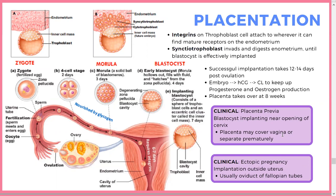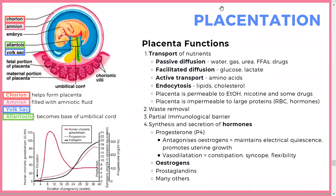The placenta transports a variety of substances via passive, facilitated, active, and endocytosis mechanisms. You don't need to memorize every molecule, but the principle is: smaller molecules pass more easily, and lipophilicity or hydrophilicity affects transport. Water passes easily and passively; large amino acids or lipid chunks need more effort.